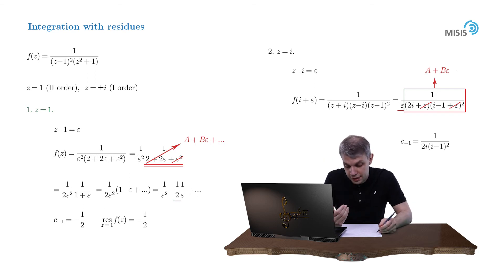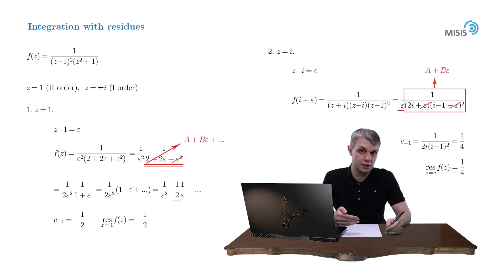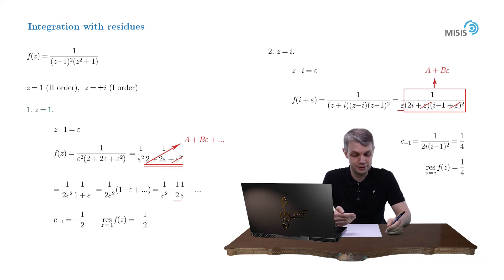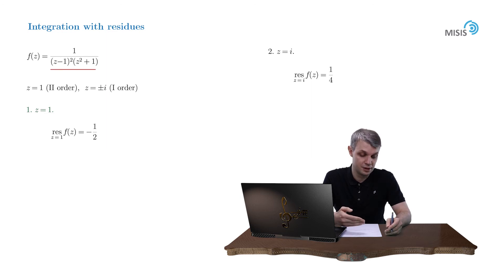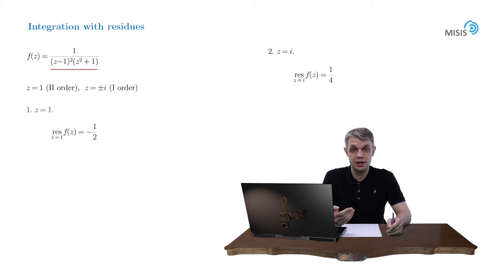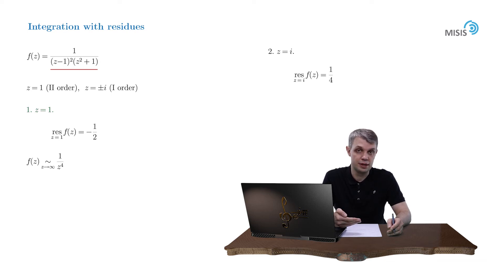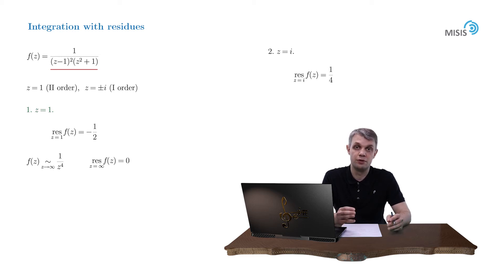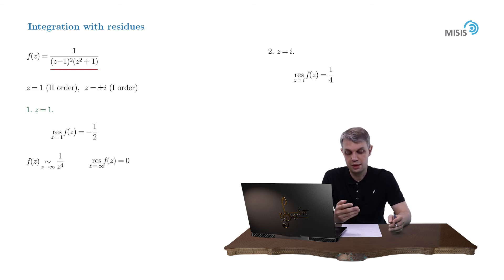Now the third residue at z = −i. Rather than repeat the procedure, we use the theorem that the sum of all residues of a function, including the residue at infinity, equals zero. The asymptotic behavior of this function is 1/z⁴, so there is no 1/z term at infinity — the residue at infinity is zero. Therefore the sum of the three finite residues must be zero. We already have −1/2 and 1/4, so the residue at z = −i is also 1/4.